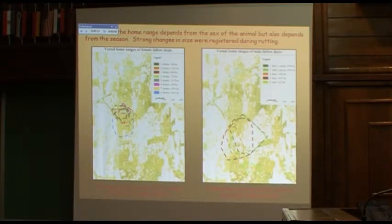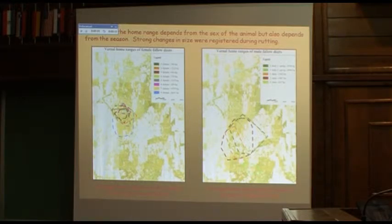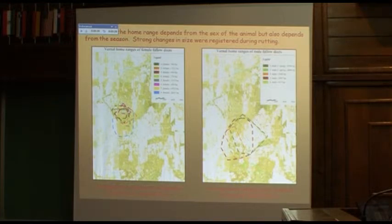The home range of males in spring is bigger than that of females and shows the use of agricultural lands. Females, especially females with calves, preferred forested areas and use smaller areas.